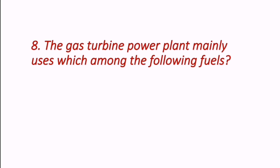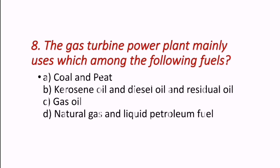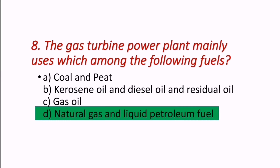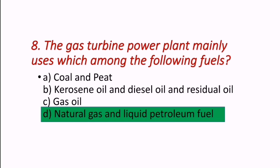Question: Which fuels does the gas turbine power plant mainly use? The answer is natural gas and liquid petroleum fuel. These two are mainly used as fuels in gas turbines.